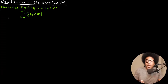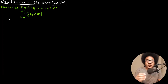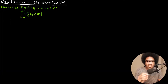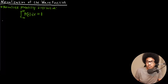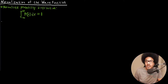So how do we actually do this with our wave function? When we get a solution to Schrödinger's equation, those wave functions are not guaranteed to give us one if we integrate over all space building a probability distribution. So whenever we get a solution to Schrödinger's equation, it is an unnormalized wave function.